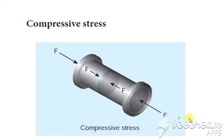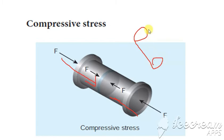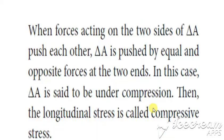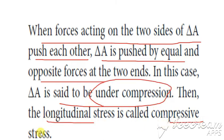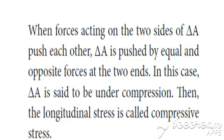Compressive stress also involves equal and opposite forces, but instead of being pulled, the body is pushed. In tensile stress the object is pulled outward, while in compressive stress it is pushed inward. When the two sides of ΔA push each other with equal and opposite forces, the body is under compression, and this type of longitudinal stress is called compressive stress.